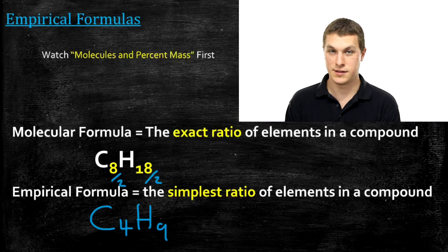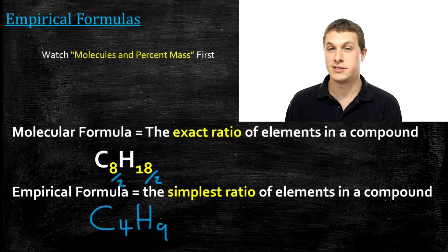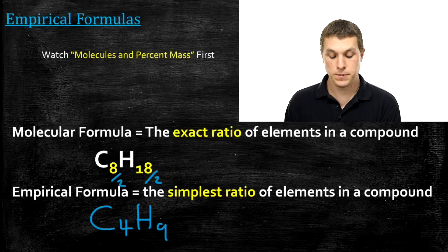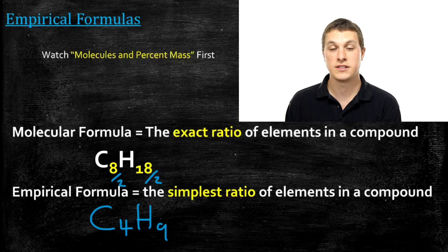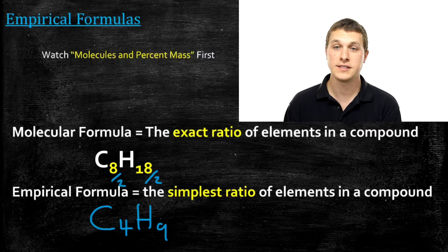Why is this useful? Well, it turns out in the lab we often don't measure exactly how many of each atom type are in a molecule. Instead, what we get is just a ratio. So if you have a bunch of C8H18 in a beaker and do some measurements, your measurements might spit out that there are four carbons for every nine hydrogens, but it won't tell you that the exact molecule is C8H18. That's why it's called empirical — the word empirical implies something related to measurement, so the empirical formula is what's easily determined from experiment.